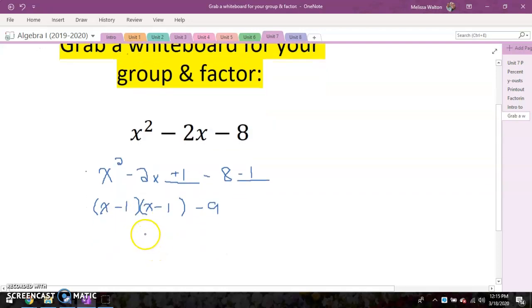And I know it doesn't look like it right now, but this is actually our vertex form. I have x minus one squared and then minus nine. Beautiful.